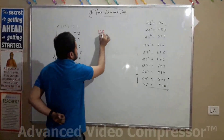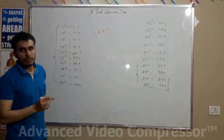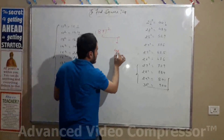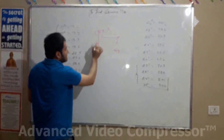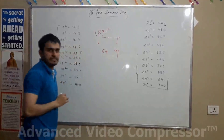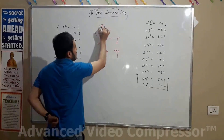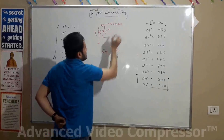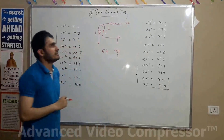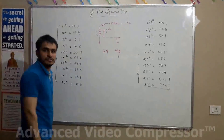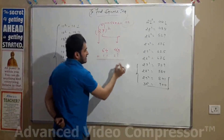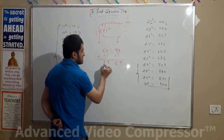Now let's take the example of 87. Square the unit digit: 7² = 49, write 49. Square the tens digit: 8² = 64. Separating the unit place from 49, carry the 4. Multiply 8 × 7 = 56, double it: 56 × 2 = 112. Writing 1 and 2, carry 1 and 1, then add everything up. The answer is 7569.